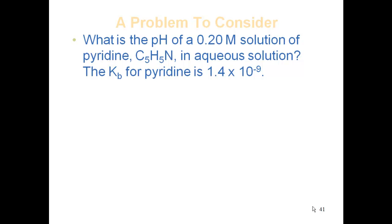What is the pH of a 0.2 molarity solution of pyridine, C5H5N, in an aqueous solution? The Kb of pyridine is 1.4 times 10 to the negative 9.